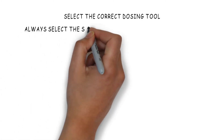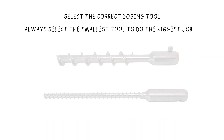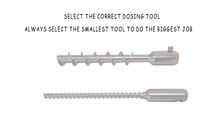Now let's discuss selecting the correct dosing tool. The golden rule of dosing tools is: always select the smallest tool to do the biggest job. We always want the smallest screw or cylinder because each rotation gives the smallest possible amount, and the control can control to one revolution. For example, if one revolution gives 1 gram versus a bigger screw giving 10 grams, you'd rather turn 10 times to get 10 grams because you can control to one tenth. For critical jobs, you may want to split the work into several tools.